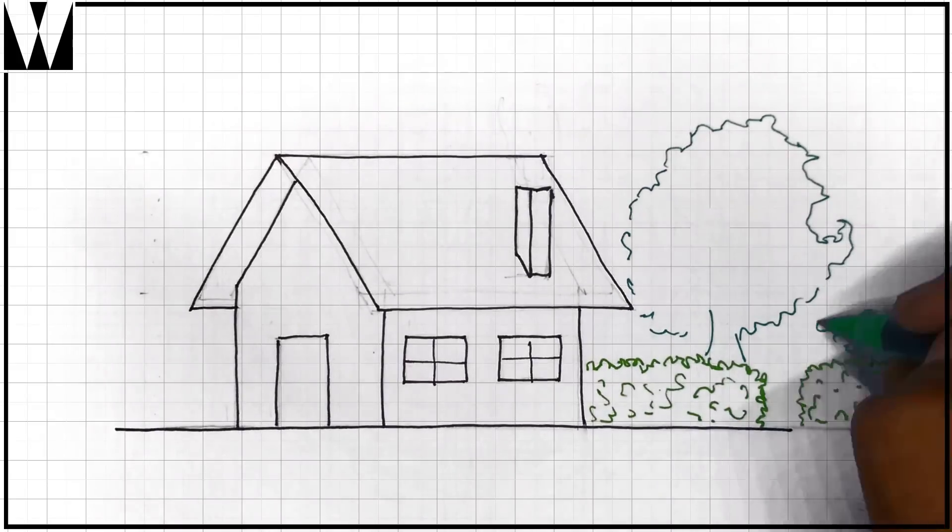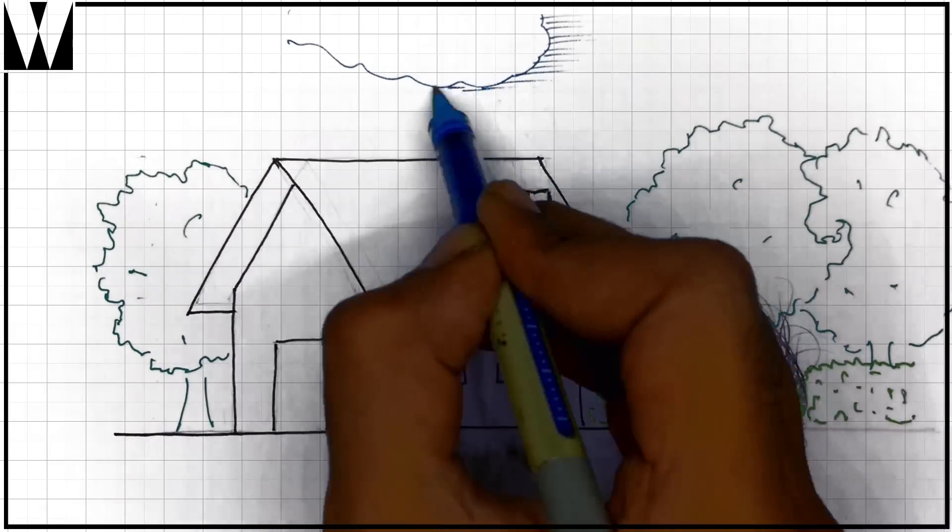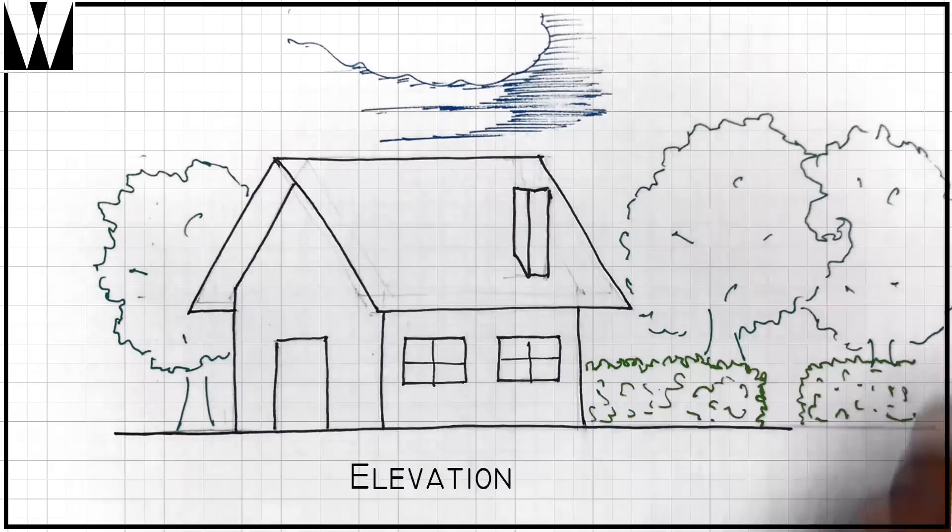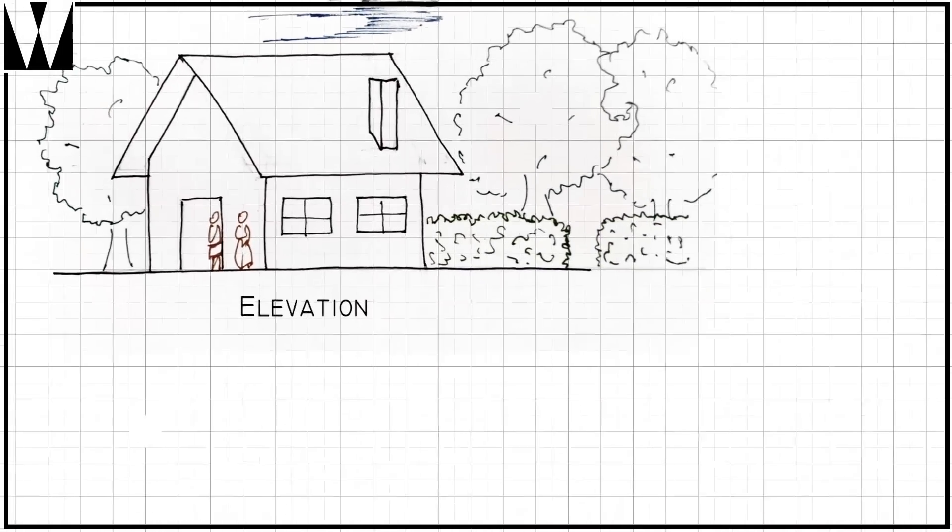And a tree to combat the climate change of course. So what we have drawn here can be called an elevation, an elevation of the house. But what would this house look like in 3D? Let's find out.